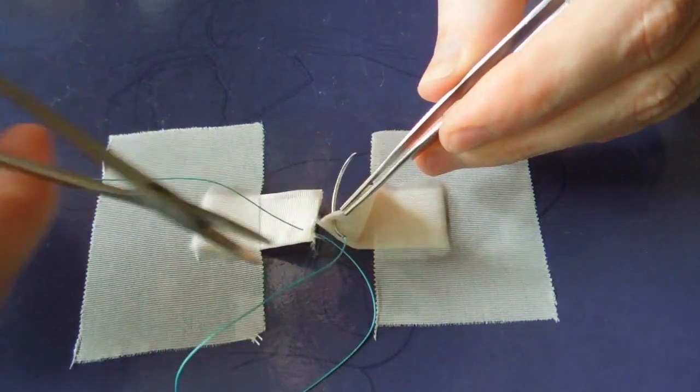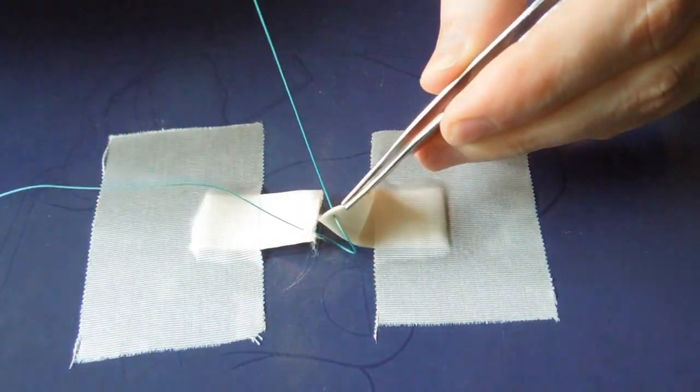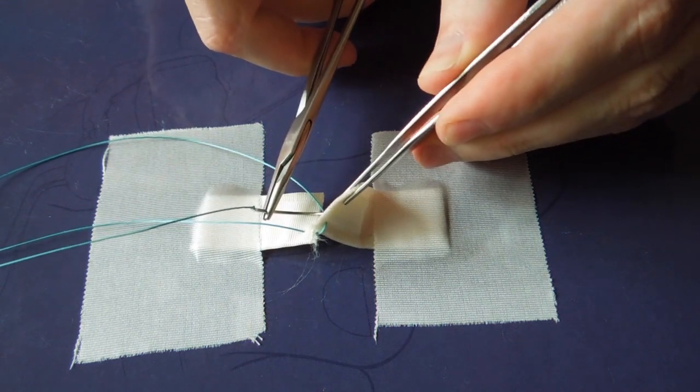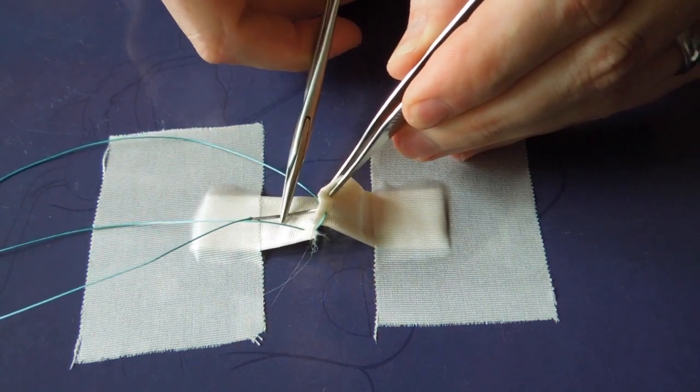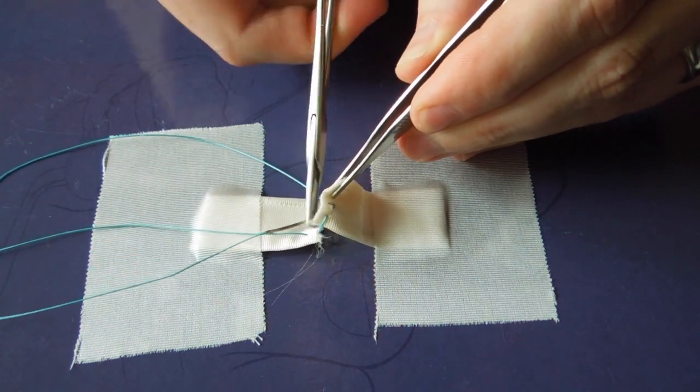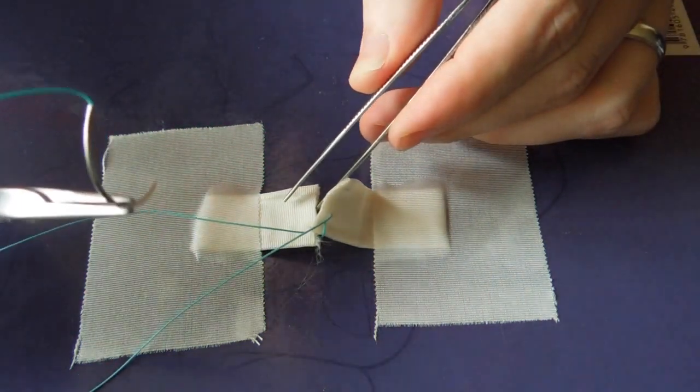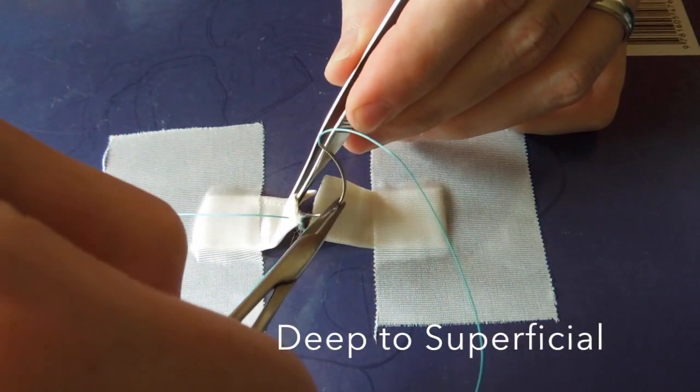Now we're going to remain on side B and again change our orientation here, and this time we're going to throw deep to superficial. We're going to perform the same throw on side A now, deep to superficial.